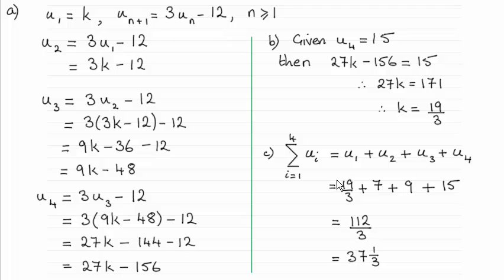Now for part C we had to find the sum of the first four terms. So that's u1 plus u2 plus u3 all the way up to u4.